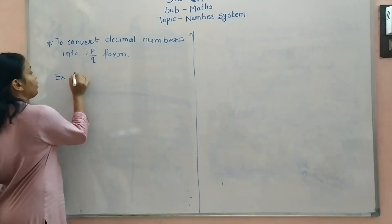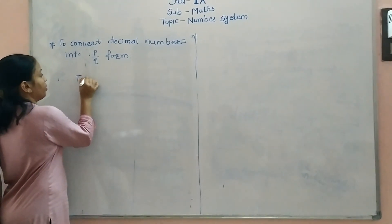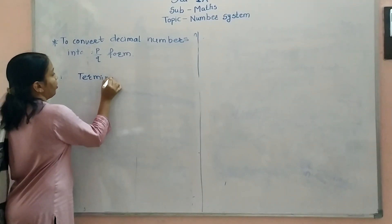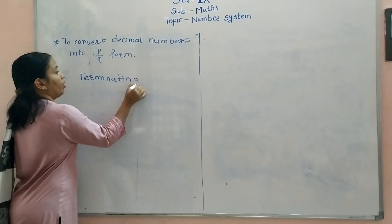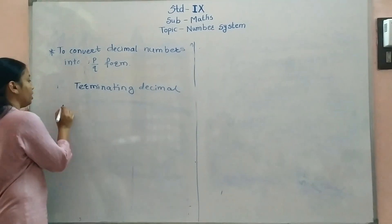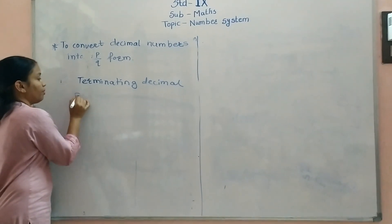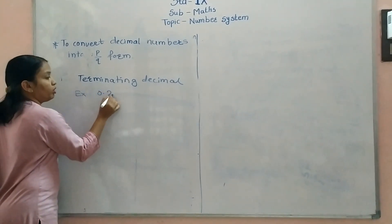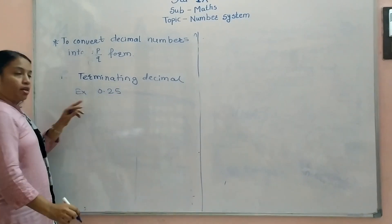For example, suppose the first type is terminating decimals. If the example is of terminating decimals, for example, 0.25, it is terminating.